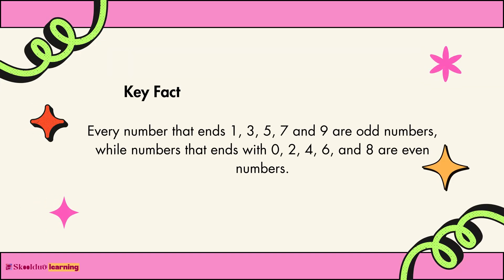Key fact: every number that ends with 1, 3, 5, 7, and 9 are odd numbers, while numbers that ends with 0, 2, 4, 6, and 8 are even numbers.